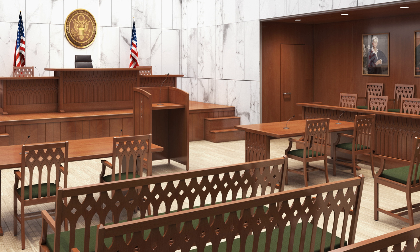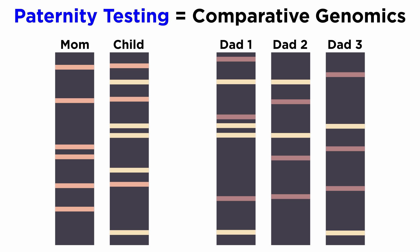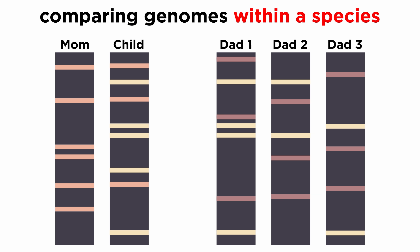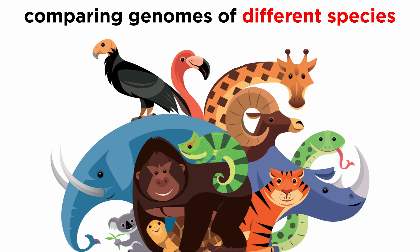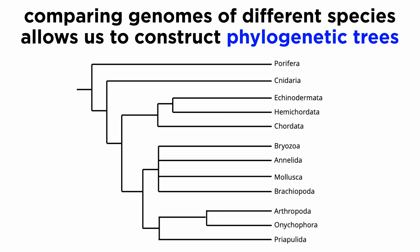Fascinatingly, comparative genomics as a field finds utility in modern-day courts. Paternity tests are essentially just a comparison of the genomes of a potential father and a child. But while genome comparisons within a species can be useful for determining paternity, we can also compare genomes between species. This allows us to create family trees among different organisms, known as phylogenetic trees.